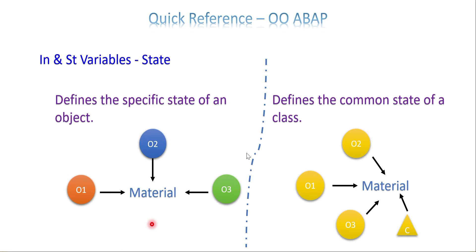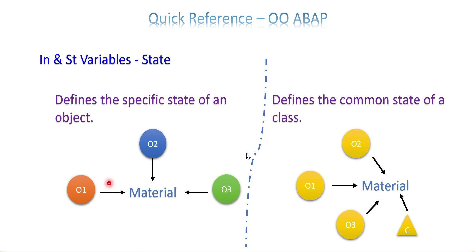For example, I have a variable called 'material' in a class — it's an instance attribute, simply a variable. I'm going to access this instance attribute with three different objects. Each has its own state. If O1 assigns a value of material as 1, and O2 accesses the material after this assignment, it is not going to receive the same value, because these are three different states — three different memory locations. Whatever you assign is only applicable for that object. That is the base rule of instance attribute.